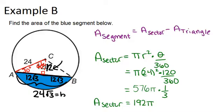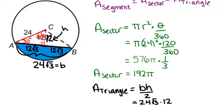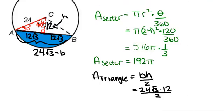So, 24 root 3 is the base, and 12 is the height. So, if I want to figure out the area of the triangle, I have to remember to find the area of a triangle as base times height divided by 2. And I know that my base is 24 root 3, and my height is 12. So, I have to just multiply that out, and I get 144 root 3. And that would be units squared. So far, all my areas should be units squared.